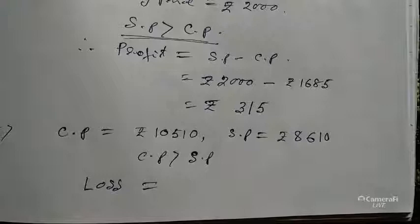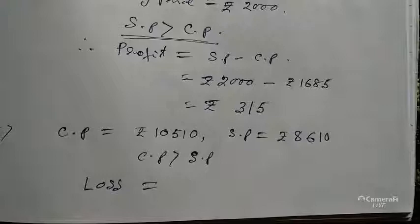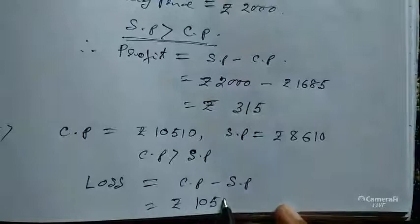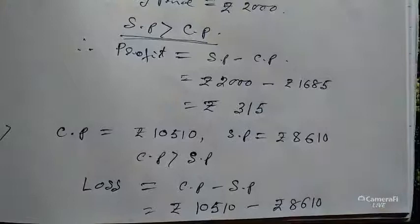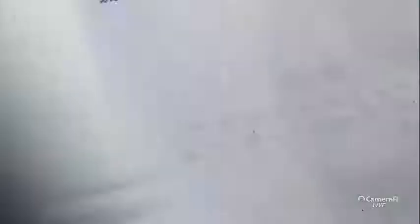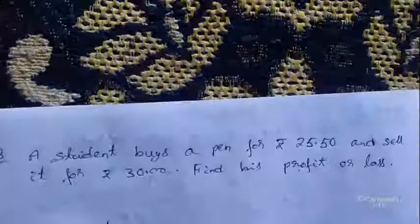Now calculate the loss: larger value minus smaller value, that is CP minus SP. CP is 10,510 minus SP 8,610. Subtracting, we get 1,900 — that is the loss. So in that case there is a loss of rupees 1,900.